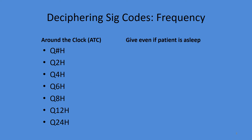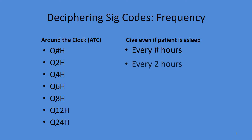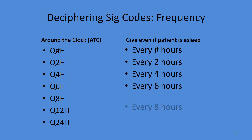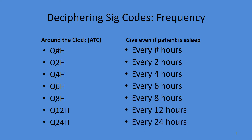'Q' most likely stands for 'every,' so it's every whatever hours as specified. Q2h is every two hours, q4h is every four hours, and so on all the way to every 24 hours. You can have any interval in between, and it doesn't have to be hours — it could be minutes.